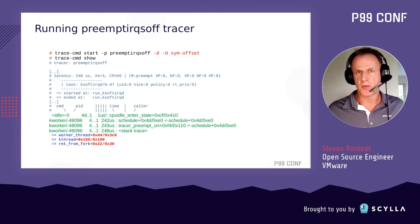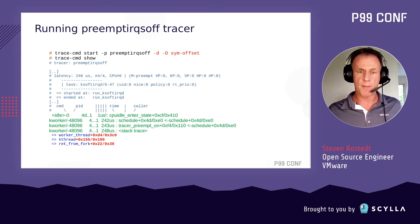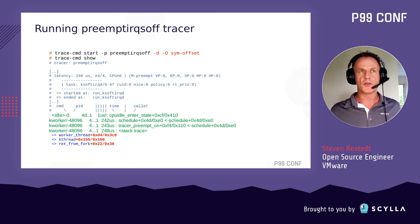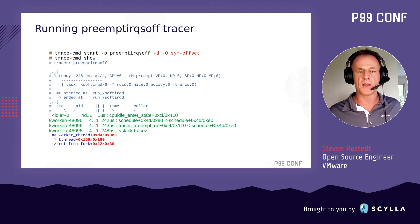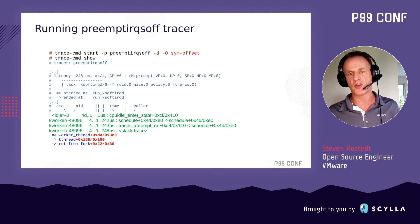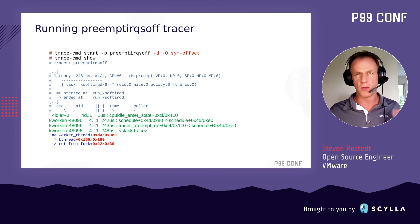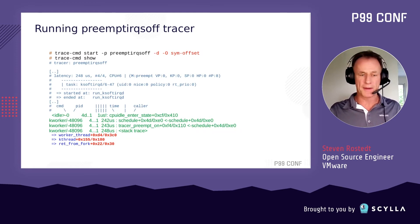If you just want to know the longest time interrupts or preemption are disabled without function tracing in between, add 'dash D' to the trace-cmd start option — that disables function tracing during the measurement. The 'dash capital O sym-offset' option adds more information to the stack trace, giving you an index from the function start plus where the call occurred, so you can go into GDB with a debug kernel build and find the exact lines of those function calls.